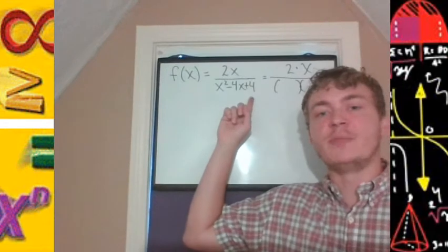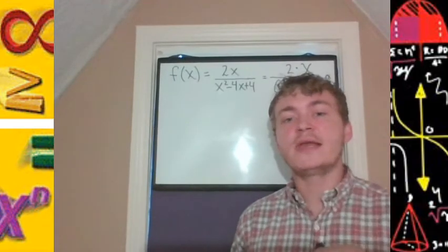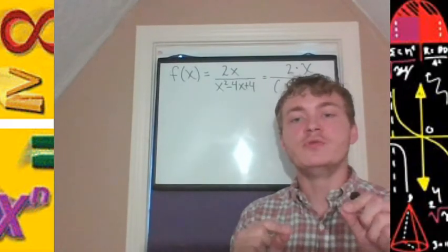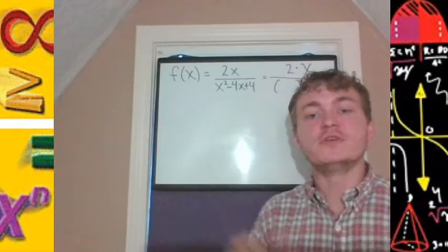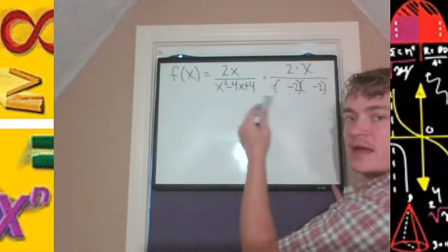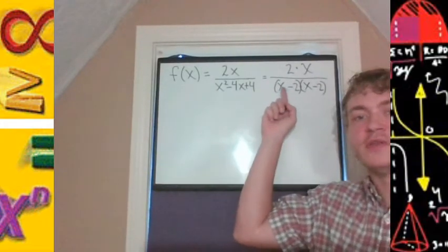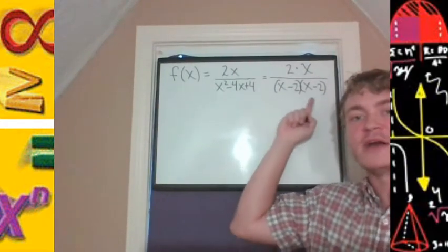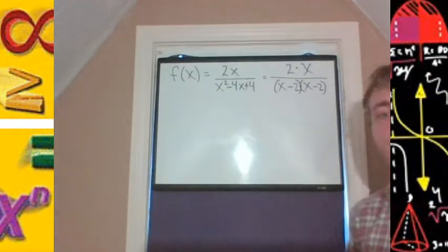We ask for two numbers that multiply to give positive 4 but add to give negative 4. Two negative numbers will multiply to give a positive and add to give a negative: negative 2 times negative 2 is positive 4, and negative 2 plus negative 2 is negative 4. So the denominator factors as x minus 2 times x minus 2. Using FOIL: x times x is x squared, the inner and outer products give minus 2x each combining to minus 4x, and minus 2 times minus 2 is positive 4.